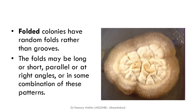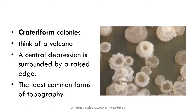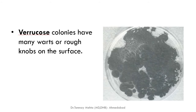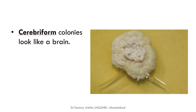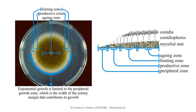Folded colonies have random folds — long or short, parallel or at right angles. Crateriform colonies look like a volcano with a central depression surrounded by a raised edge. Verrucose colonies have warts or knobs on the surface, like cauliflower growth. Cerebriform colonies look like a brain emerging from the culture medium, where exponential growth is limited to the peripheral growth zone.